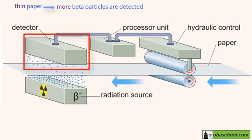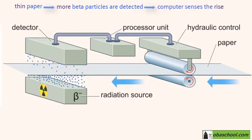When the detector records a higher count rate, a computer senses that the count rate has risen and therefore this reduces the force applied to the rollers to make the paper thicker.